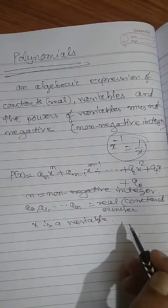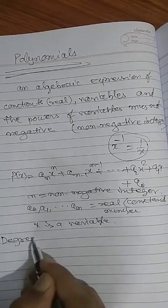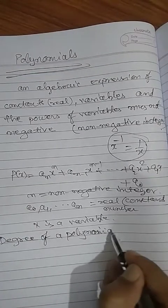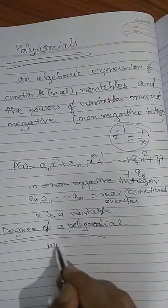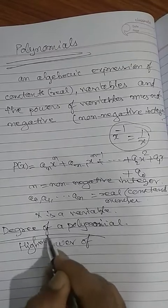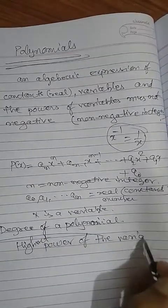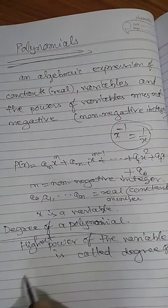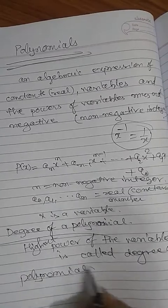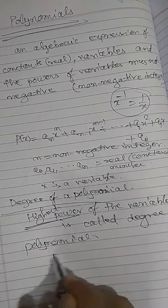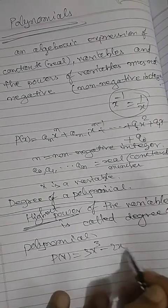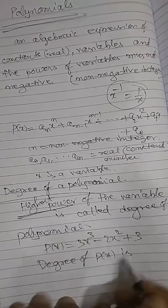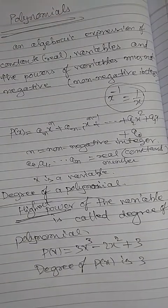Now the question is: degree of a polynomial. What do you mean by degree of a polynomial? The highest power of the variable is called the degree of the polynomial. For example, suppose P(x) = 3x³ − 2x² + 3. What is the degree of this polynomial? The highest power is 3, so the degree of P(x) is 3.